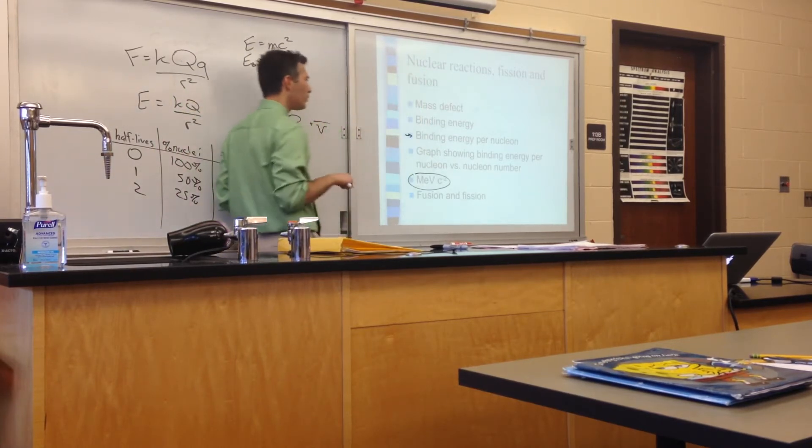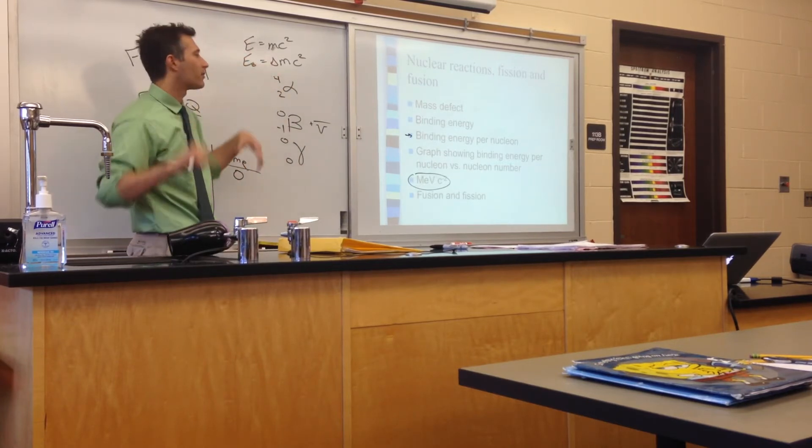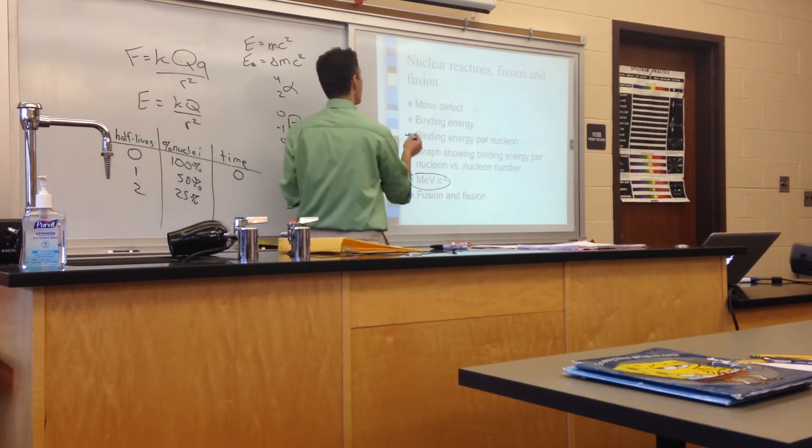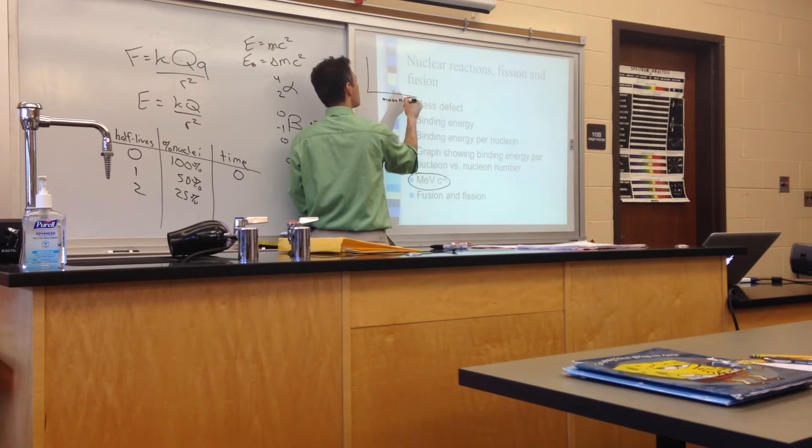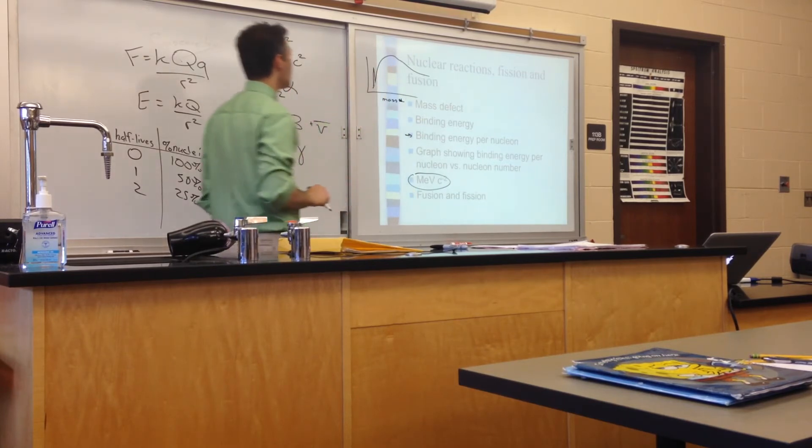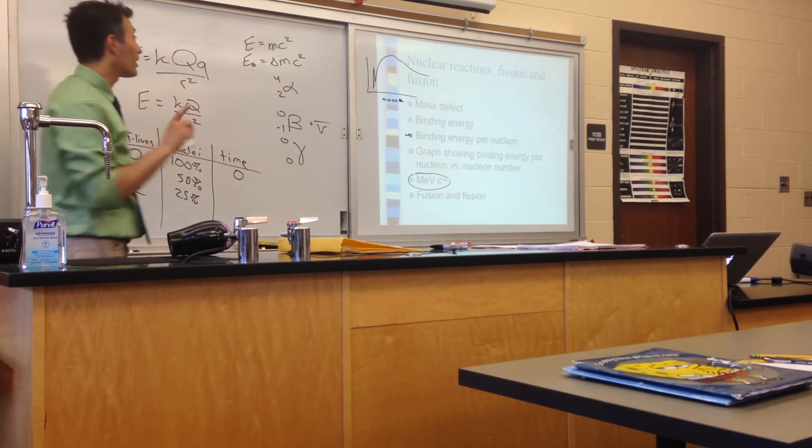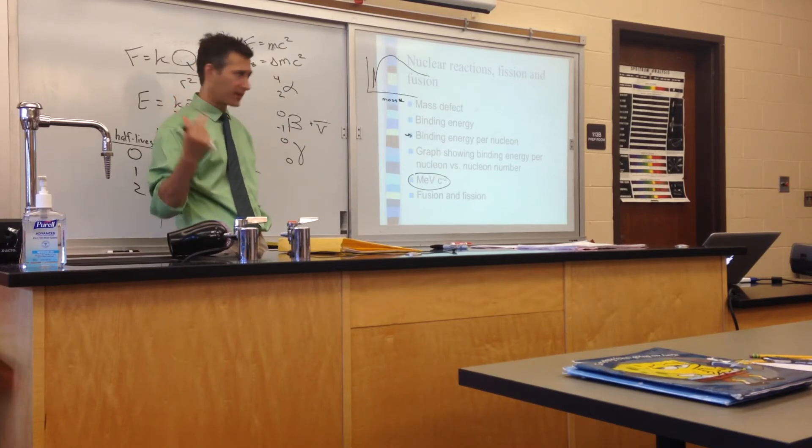We talked about binding energy per nucleon. Binding energy per nucleon is just the total binding energy divided by however many nucleons we have. And we did have that graph, which tracked the binding energy per nucleon as a function of mass number. It kind of looked like this. But we did have that kind of weird spike. Who was that weird spike for? Helium? It was for our alpha particle, helium-4. Two protons and two neutrons is just a super stable arrangement.